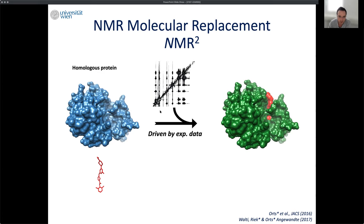We wanted to do the same for NMR. The most famous experimental method in NMR is the NOE. We collect NOE data, then look in the PDB for a homologous protein structure, and on top of that we add the bioactive conformation of the ligand. Combining these three pieces of information, the NMR molecular replacement method will provide the structure of the complex.